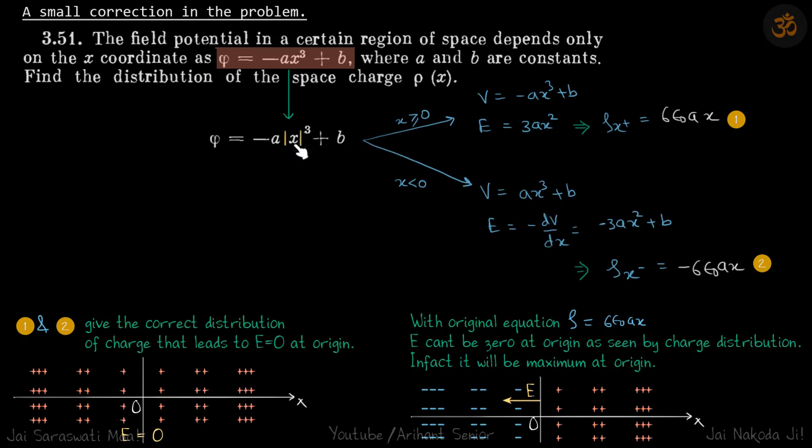If I am removing the mod, this minus sign will be taken care of for less than 0. If I remove the mod, this becomes ax³ plus b. And from here if I do minus ∂V/∂x, my electric field comes to be minus 3ax², and from this electric field if you calculate the ρ at a distance x backwards...